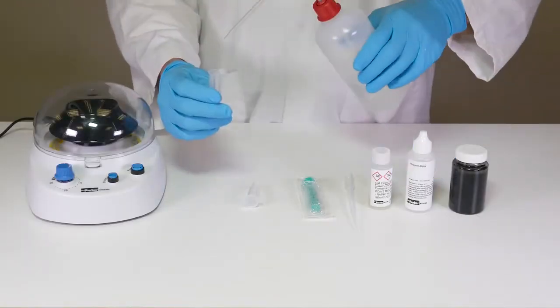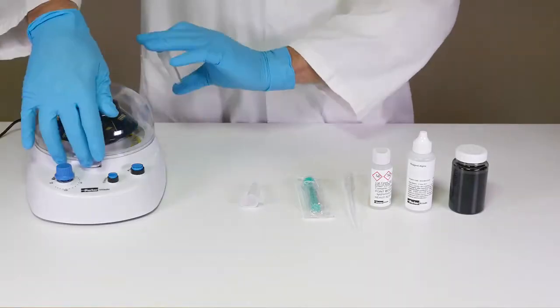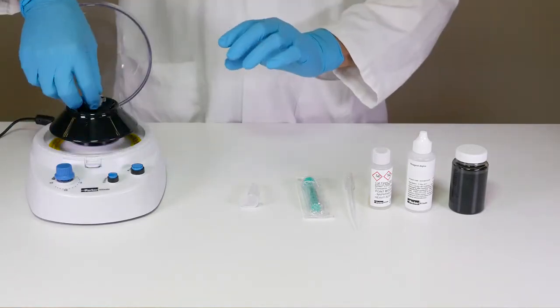Firstly, fill one of your test tubes with water to the five milliliter graduation line. This is to ensure the centrifuge is balanced correctly.